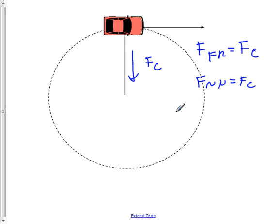Force normal, in this case, will be equal to m times g, since it is a horizontal surface, and multiply that by the coefficient of friction.